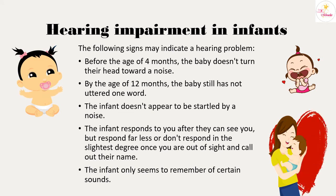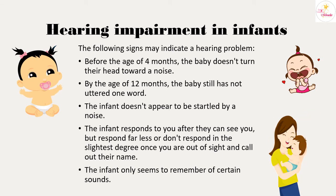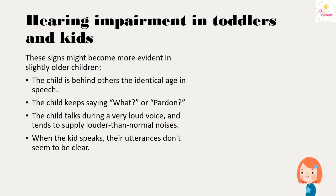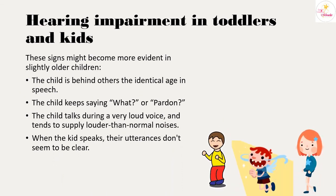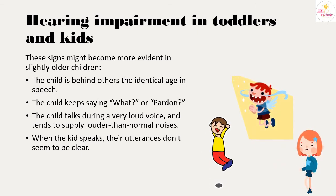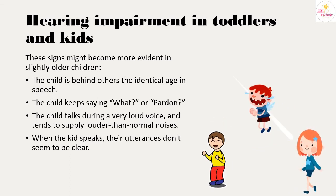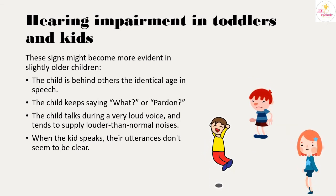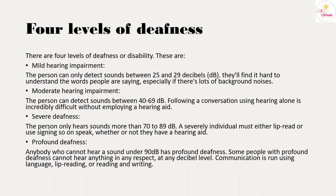By the age of 12 months, a baby with a hearing problem still may not have uttered a single word. The infant doesn't appear startled by noise, responds to you when they can see you but far less or not at all when you call their name out of sight, and seems aware of only certain sounds. In toddlers and children, signs include speech delays, frequently saying 'what' or 'pardon,' speaking in a very loud voice, and producing unclear utterances.